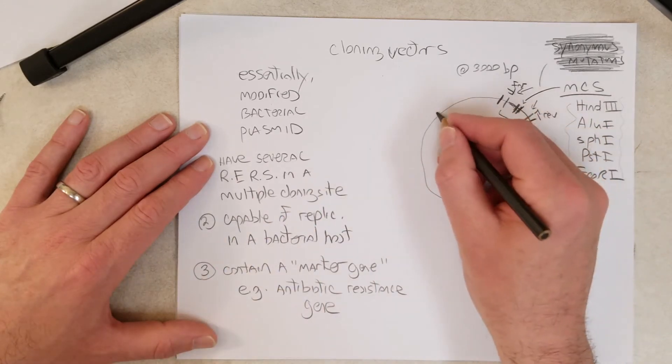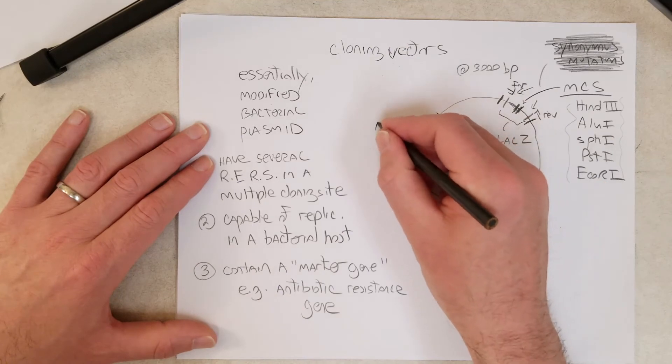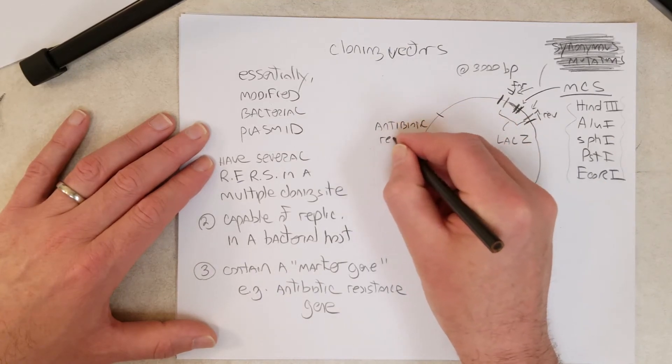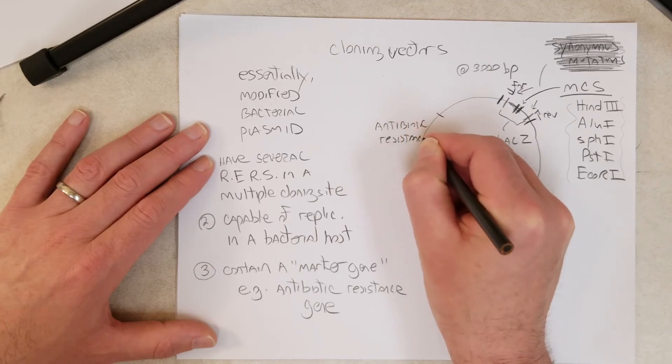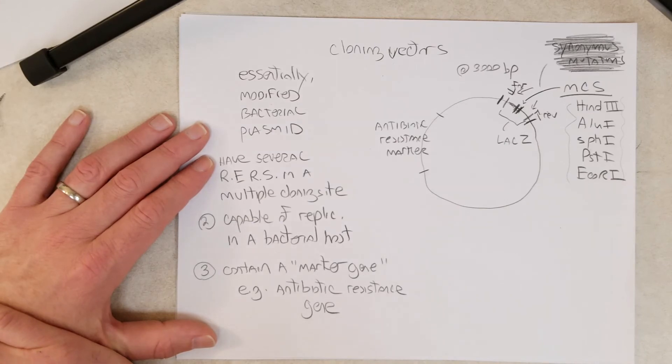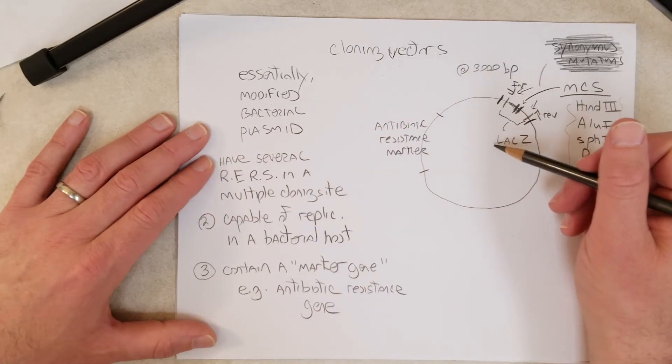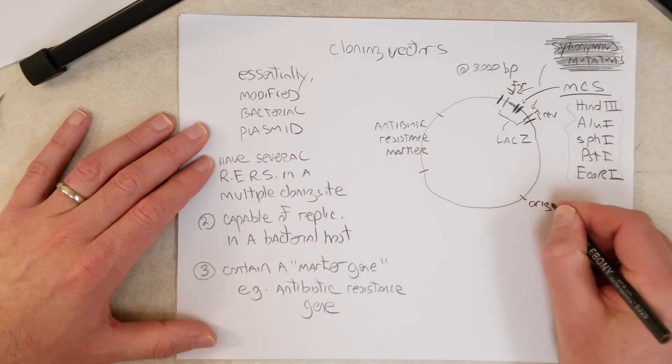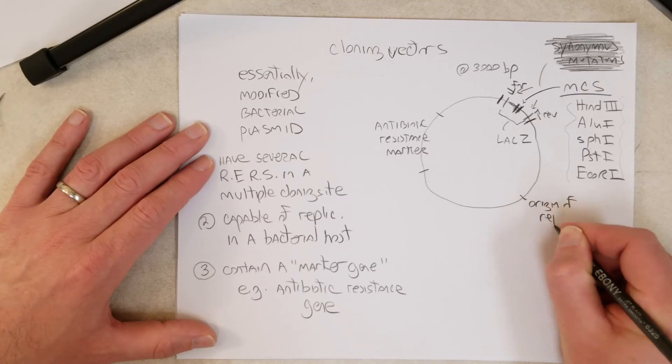Over here, we would have an antibiotic resistance gene. This is our marker that helps us know when a bacterium contains our cloning vector, and the origin of replication.